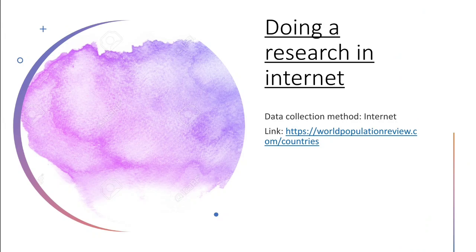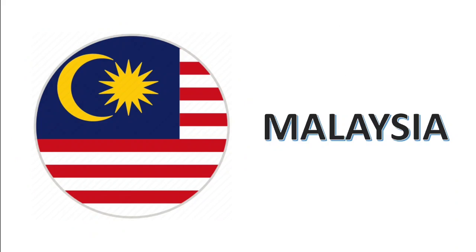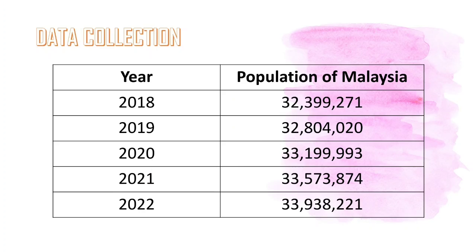We conducted our research on the internet. First is the population of Malaysia. This is the data collection from 2018 to 2022. The population of Malaysia is around 32 million to 33 million.